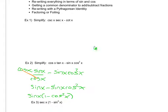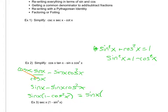As I saw in the last example, sine squared x plus cosine squared x equals one. Therefore, sine squared x equals one minus cosine squared x. I know to look for that because I see a one and I see a trig function being squared. So I'm going to replace one minus cosine squared x with sine squared x.